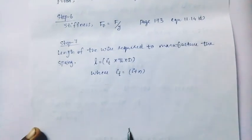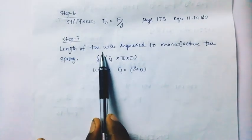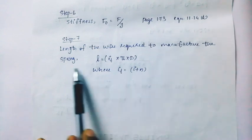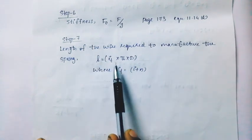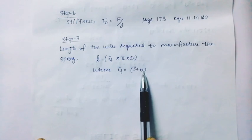Step 7 is the length of the wire required to manufacture the spring. L equals it times pi times d, where it equals i plus n.